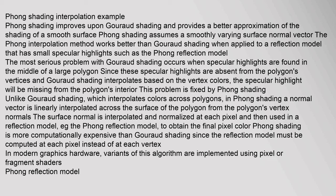Phong shading assumes a smoothly varying surface normal vector. The Phong interpolation method works better than Gouraud shading when applied to a reflection model that has small specular highlights, such as the Phong reflection model. The most serious problem with Gouraud shading occurs when specular highlights are found in the middle of a large polygon, since these specular highlights are absent from the polygon's vertices and Gouraud shading interpolates based on the vertex colors.